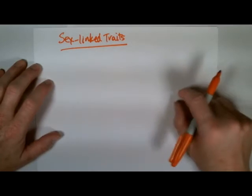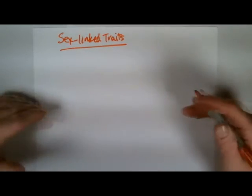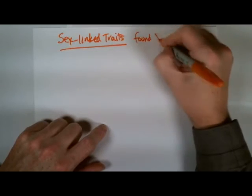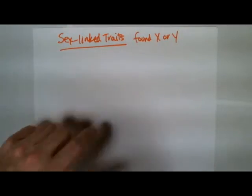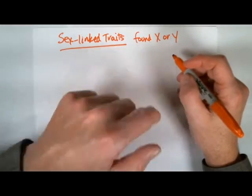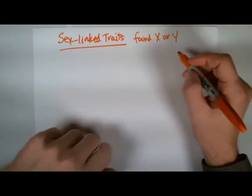Sex linked traits basically means the trait, the gene you're looking at, is found on the X or Y. So if the trait is found on the X, it's only going to be found on the X chromosome. If it's found on the Y, it's only going to be found on the Y chromosome.